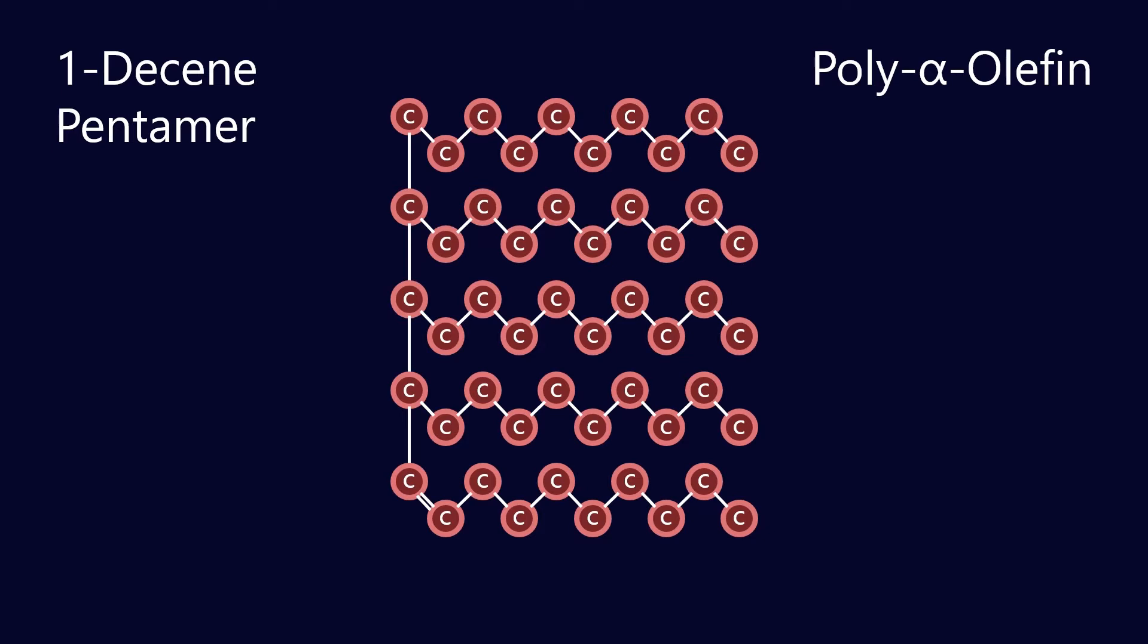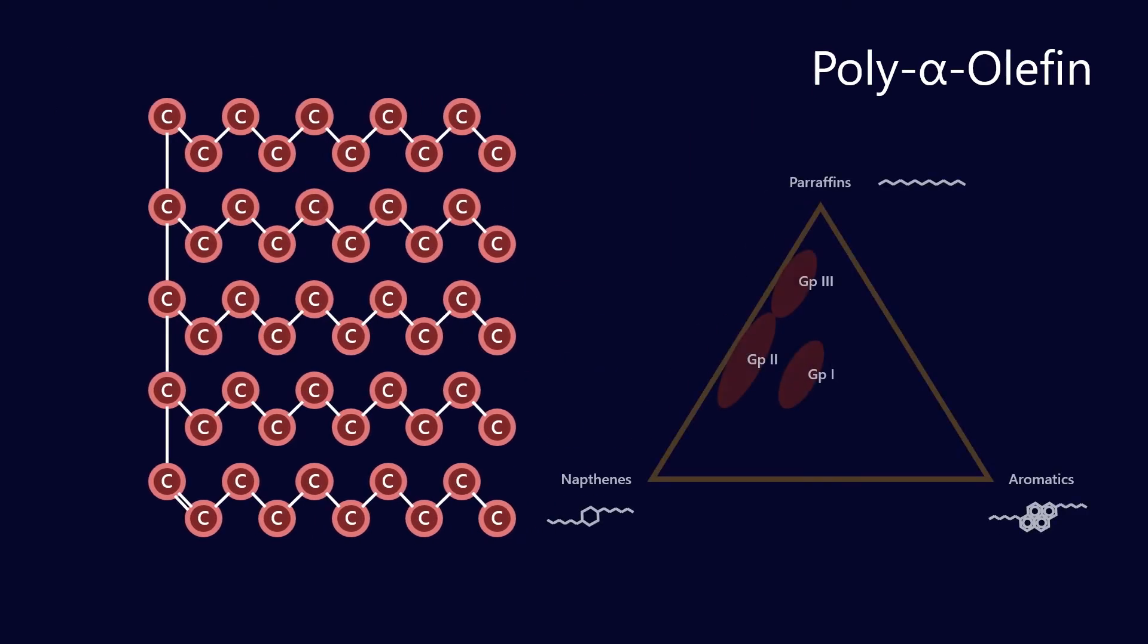In this case I'm calling this a 1-decene pentamer, that's just because there's five of them. A tetramer would be if we had four of these molecules put together into a PAO.